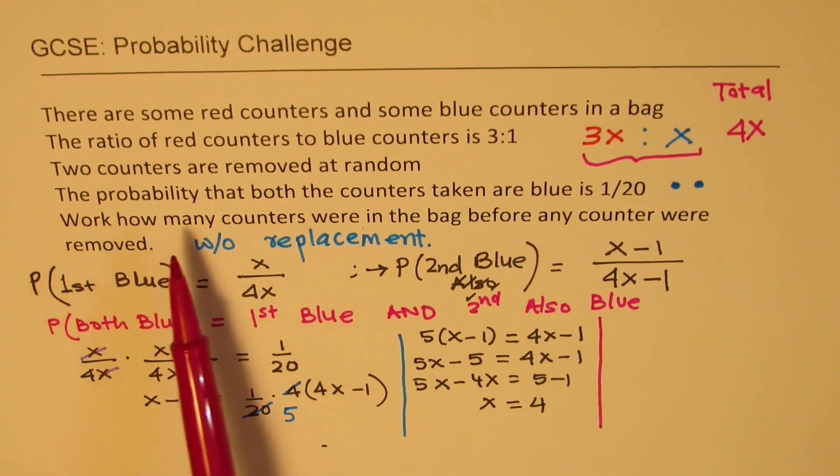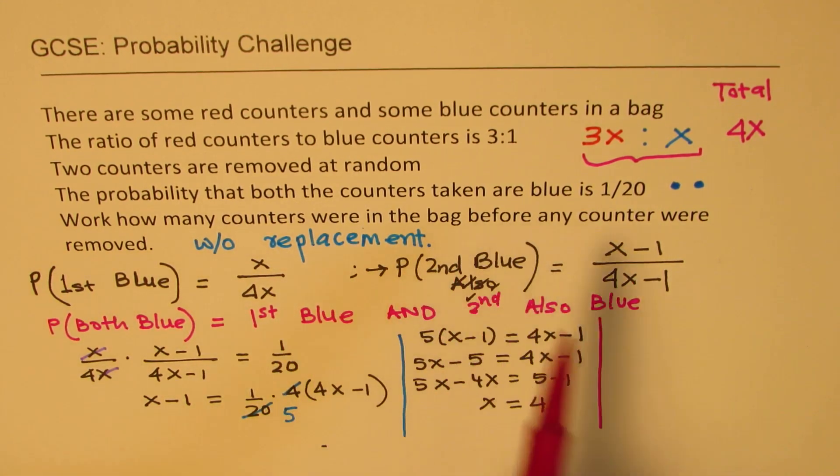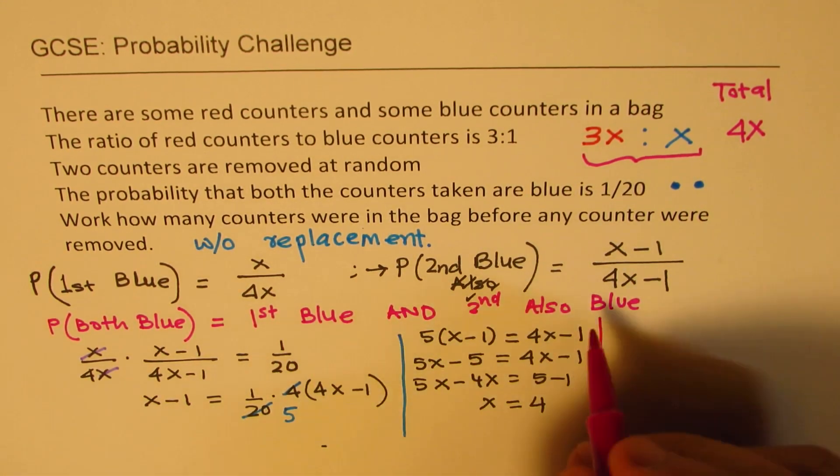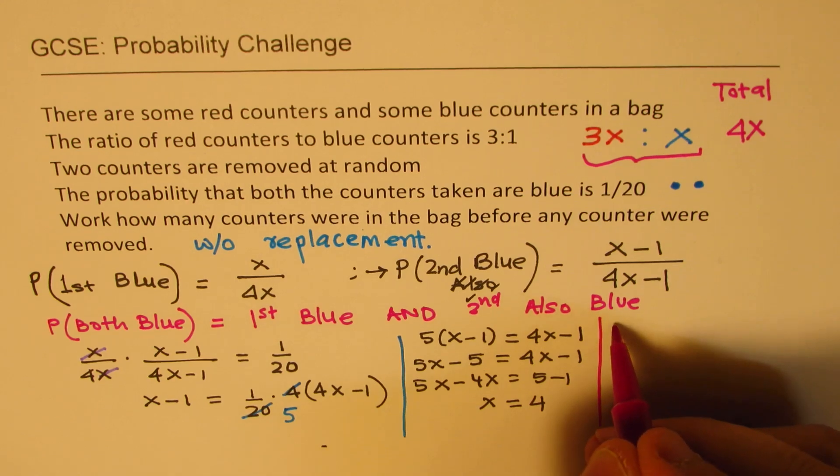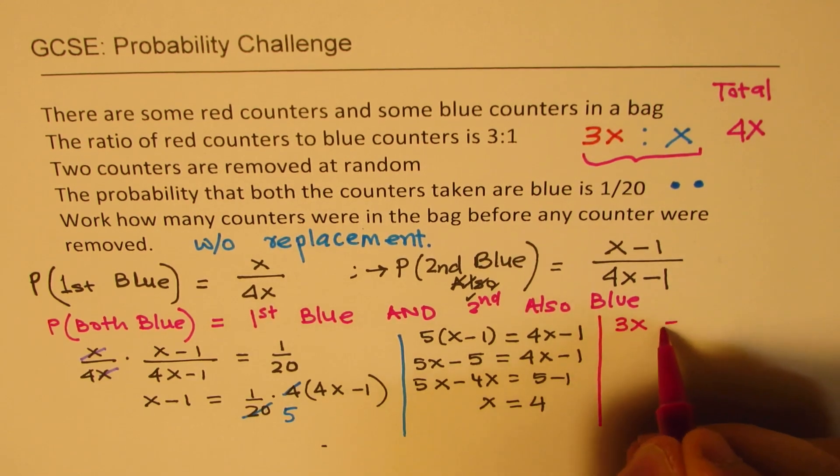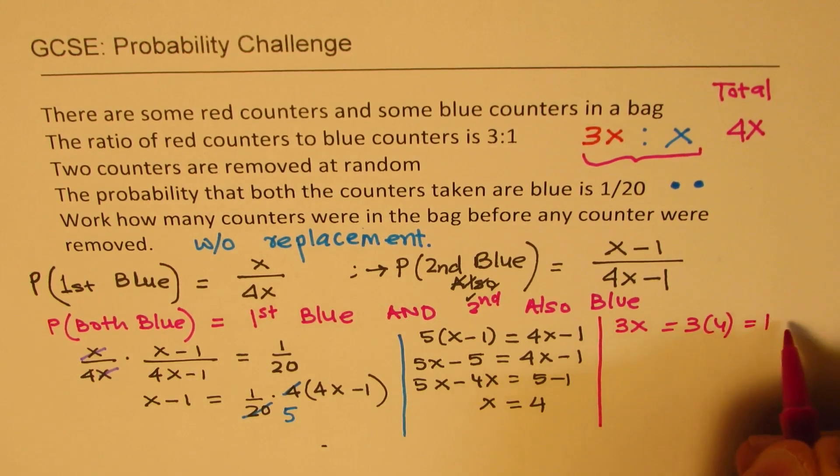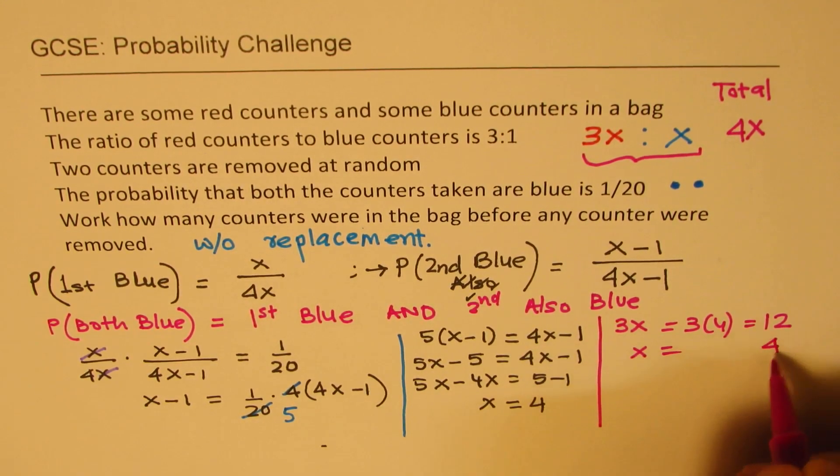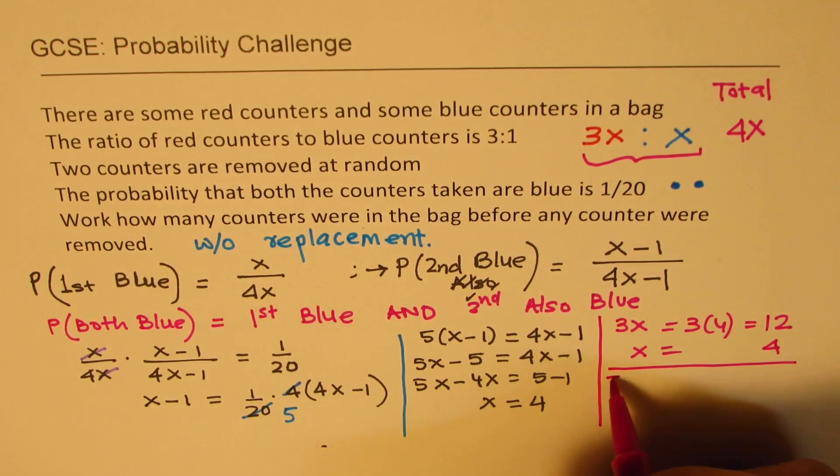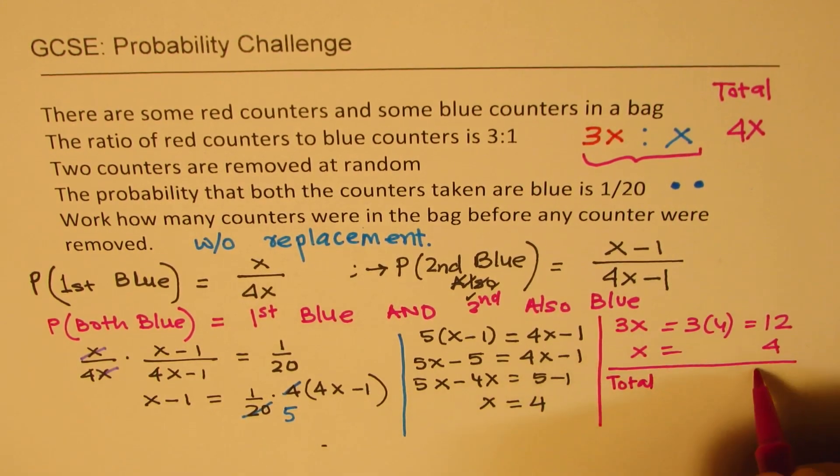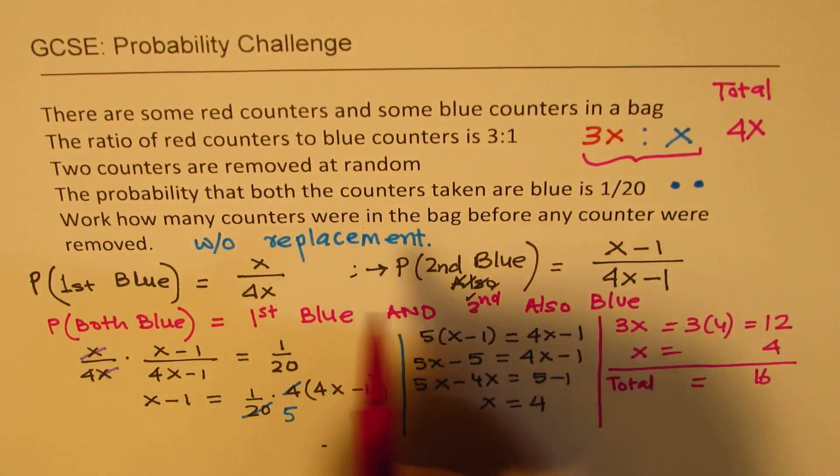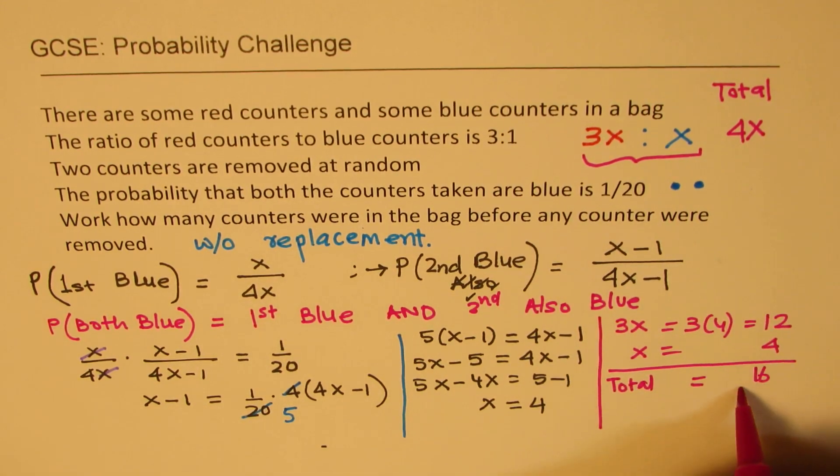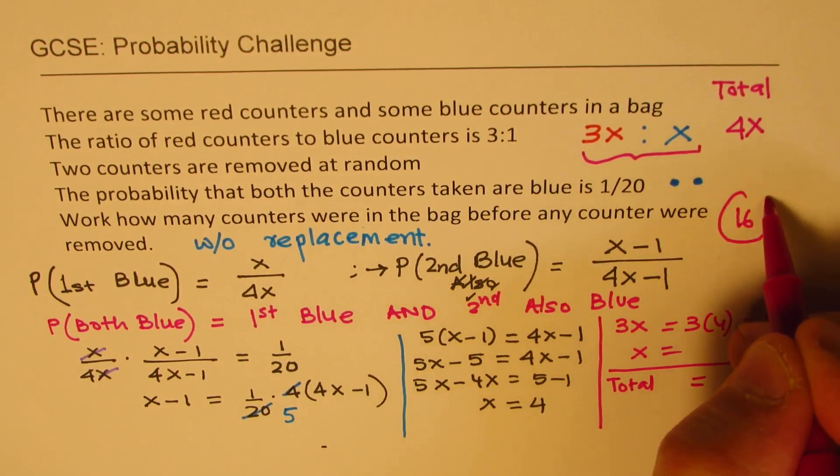So what we have got here is number of the blue counters. What do we want? Work how many counters were in the bag. We want total. So to start with, we have 3x. So 3 times x will be 3 times 4, which is 12. And then x is 4. So the total is how much? 16. So we get the answer as 16. So there was 16 to begin with.